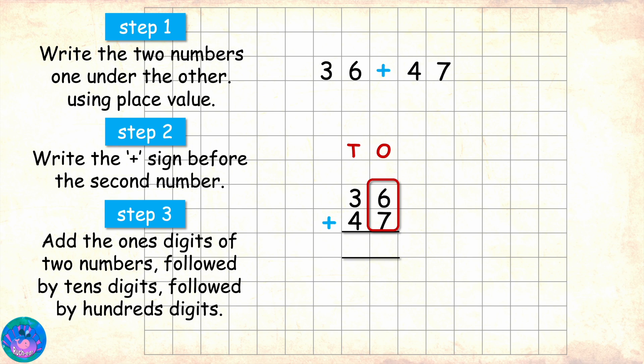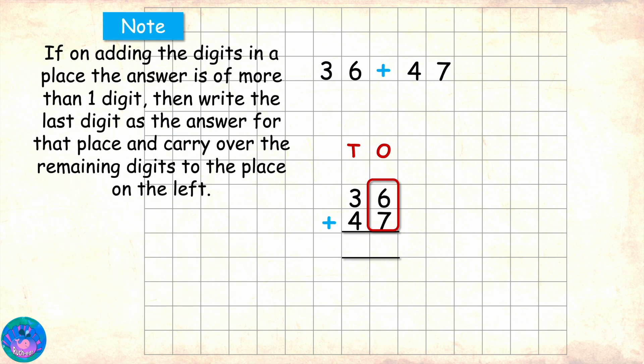Correct! And 13 is a two-digit number, but we can have only one digit in a place. Yes, the rule we will follow here is, if on adding the digits in a place, the answer is of more than one digit, then we write the last digit as the answer for that place and carry over the remaining digits to the place on the left.